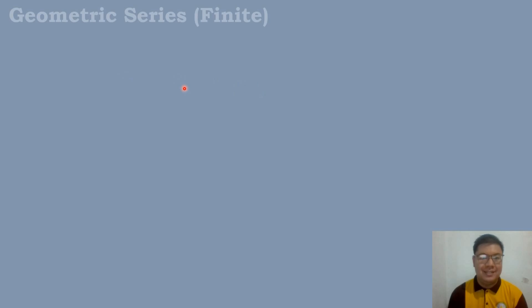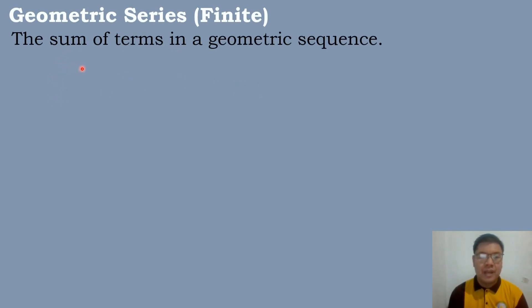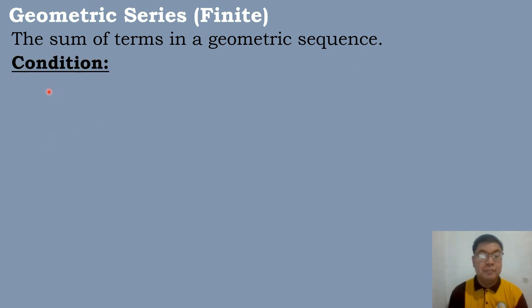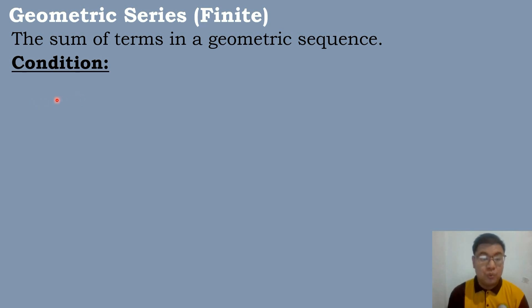Let us define first what is a geometric series. When we say geometric series, it is the sum of terms in a geometric sequence. To solve for the geometric series of a geometric sequence, we have four conditions that we need to consider.